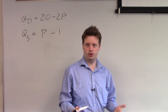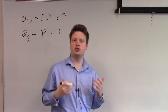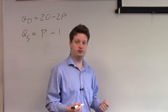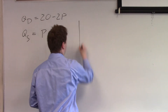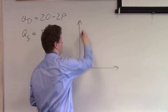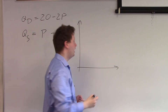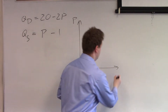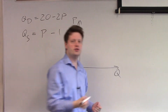The first step we need to do is figure out what is on the vertical axis and what's on the horizontal axis in our graph. In a standard format we will have the price on the vertical axis and the quantity on the horizontal axis.